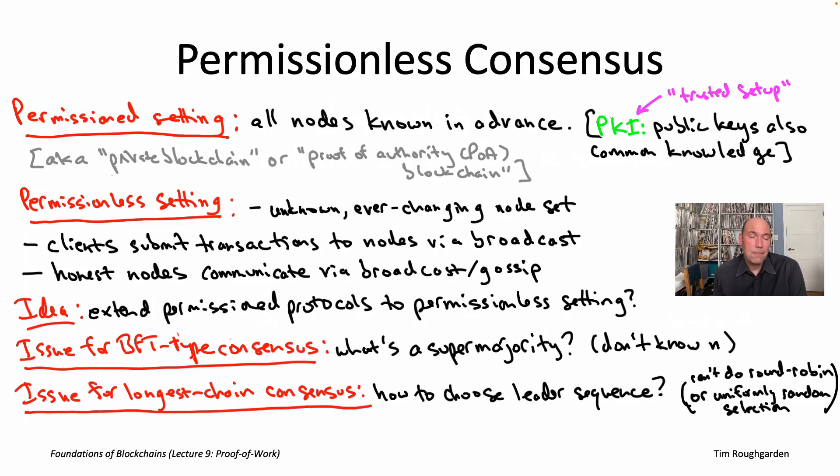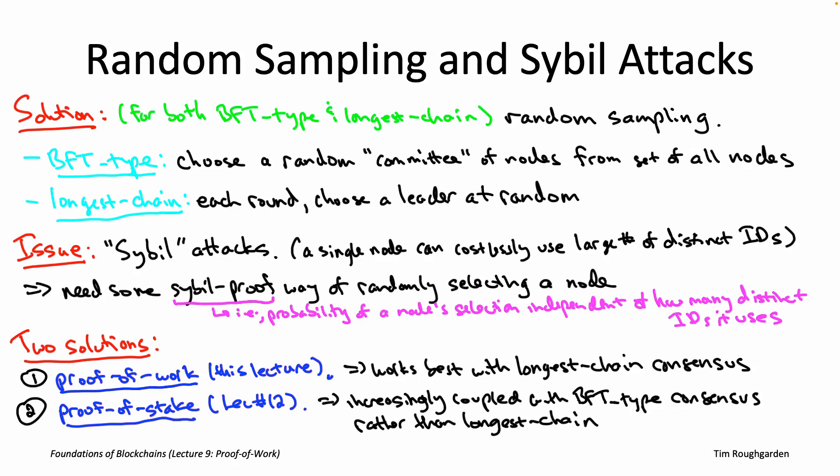We've seen at least one solution back in lecture nine when we talked about proof of work and Nakamoto consensus. The key insight is that we were missing really only one ingredient for turning permissioned protocols into permissionless ones: some way of doing Sybil-resistant random sampling. By random sampling I mean some procedure by which you randomly select one of the nodes running the protocol. In longest chain consensus, each round has a leader — you could invoke that box once per round. BFT-type protocols similarly have a leader each round making the initial block proposal that other nodes vote upon.